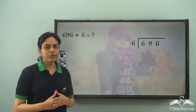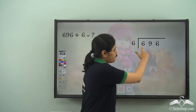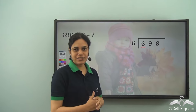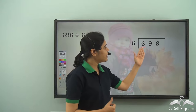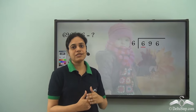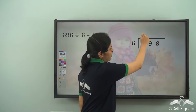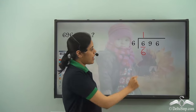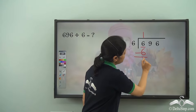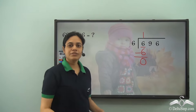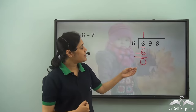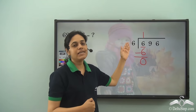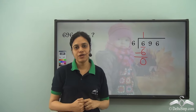Let's recall how we do it. First, I divide the first digit which is 6. How many times does 6 go into 6? One time. So I write a 1 here, and 1 into 6 is 6, and I subtract it to get 0. It is completely divided, so I get a 0 here.